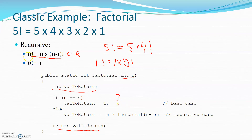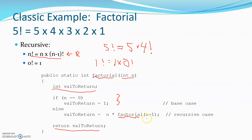The recursive case: the value to return, if we're dealing with n and this is supposed to do n factorial, is n times factorial(n minus 1). This factorial call is the method calling itself — that's the recursive case. And in a reducing manner, if we came in with n, we're now calling ourselves with n minus 1. That's the reducing part, because it is smaller than what we came in with.